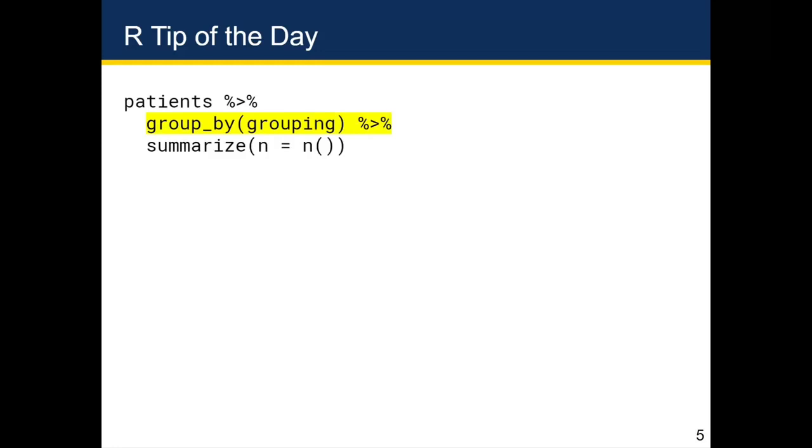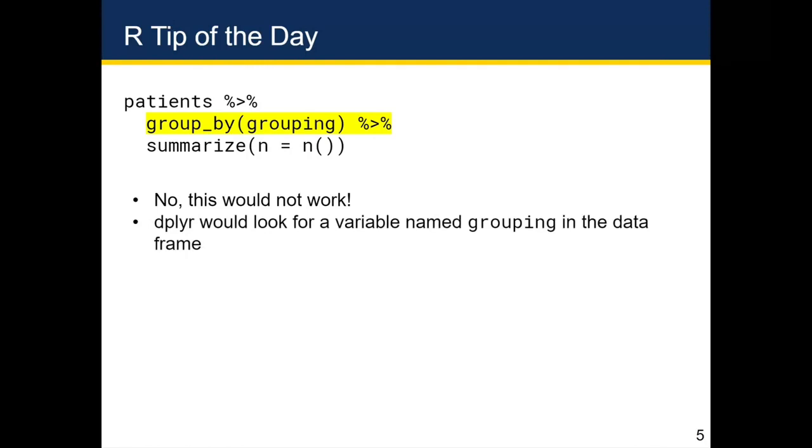So if you type this code, you'll get an error and it won't work. The reason it won't work is that dplyr or Tidyverse will look for a variable named grouping in the data frame. And when this is not found, it will result in an error. And the error you get is error column grouping is unknown.